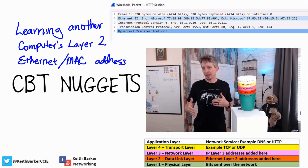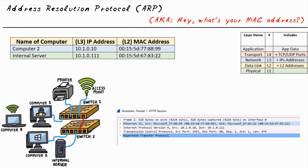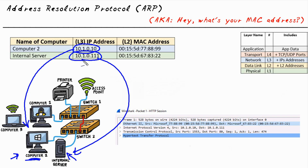This video is about how a computer discovers another computer's Layer 2 address on the same network using ARP. Here is Bob's computer — Computer 2 — and this is the server that Bob's trying to reach with a web request. Computer 2's Layer 3 IP address is 10.1.0.10, like its street name and house number. The server, also on the same local area network, has IP address 10.1.0.111. At Layer 2, Computer 2's MAC address ends in 77-88-99.